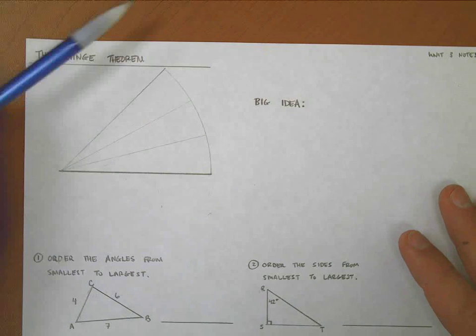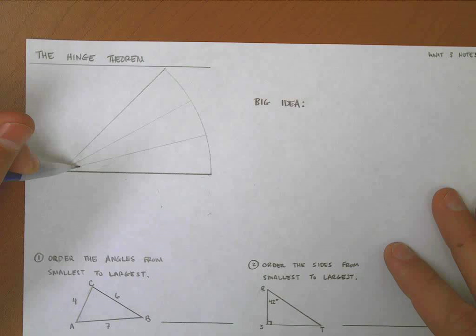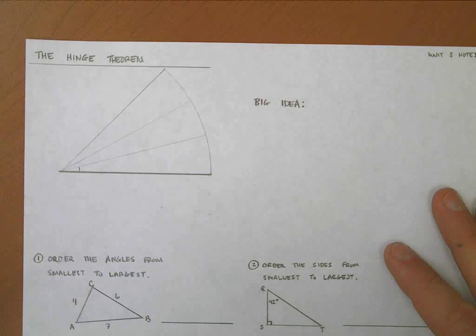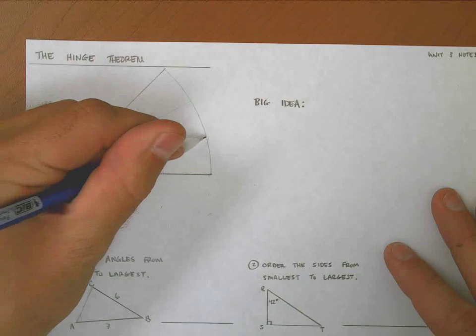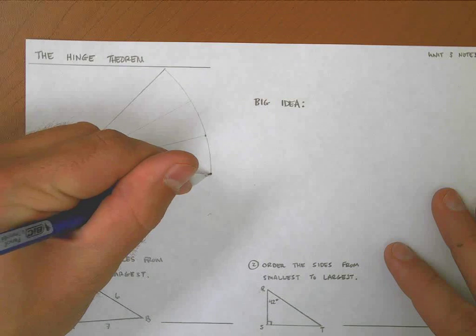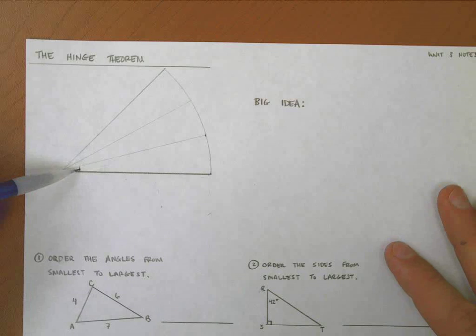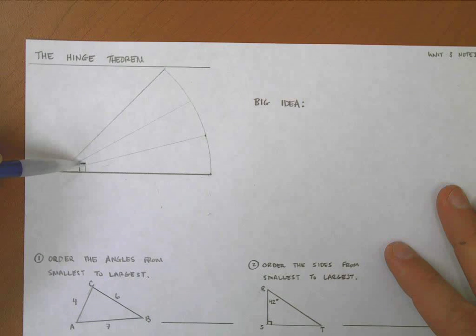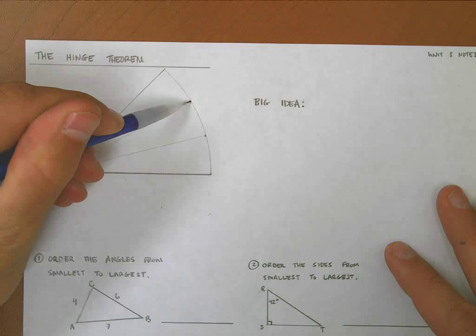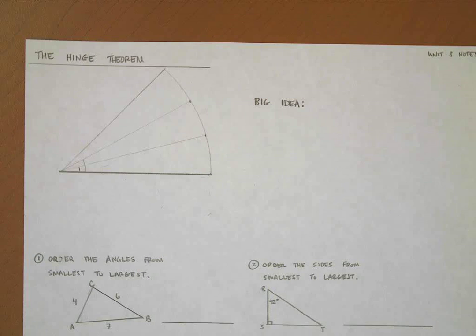I know that the angle here is going to directly affect how long the line across from it is. A smaller angle here gives me a little line, and the bigger I make this angle, the bigger the line becomes. That's what the hinge theorem says.